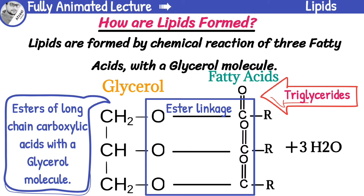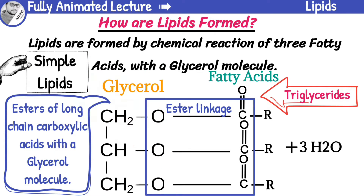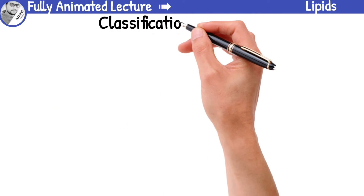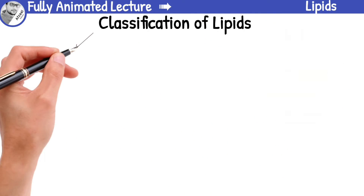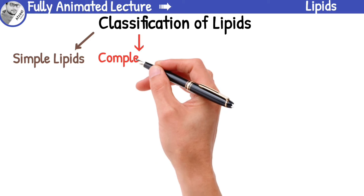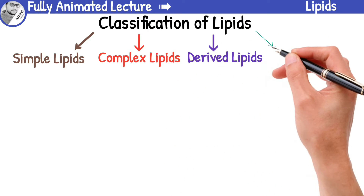Triglycerides are the most common form of lipid found in our body and are classified as simple lipids. Lipids can be classified into four categories: simple, complex, derived, and miscellaneous lipids.